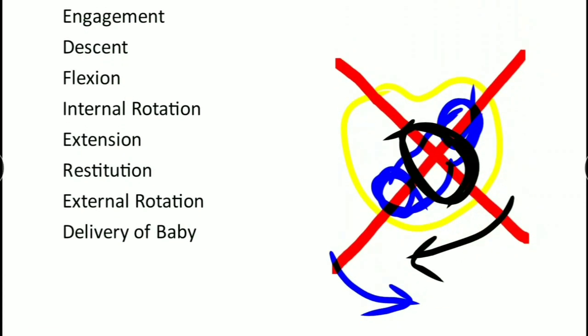We are only seeing the head outside, so the head rotation outside the body corresponding to the shoulder's internal rotation inside is known as external rotation. That occurs in the same direction as the shoulder rotating inside.